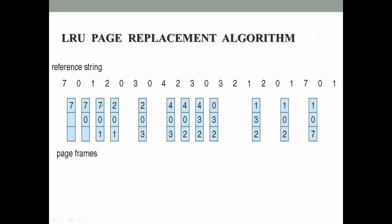Now let's go into the problem. Look at the slide carefully. The reference string denotes the set of all page numbers containing instructions referenced by the CPU. Initially the problem starts with all empty frames - we have three empty frames. Following pure demand paging, no page is loaded into memory initially. A page fault marker indicates when a page fault has occurred for a given reference.